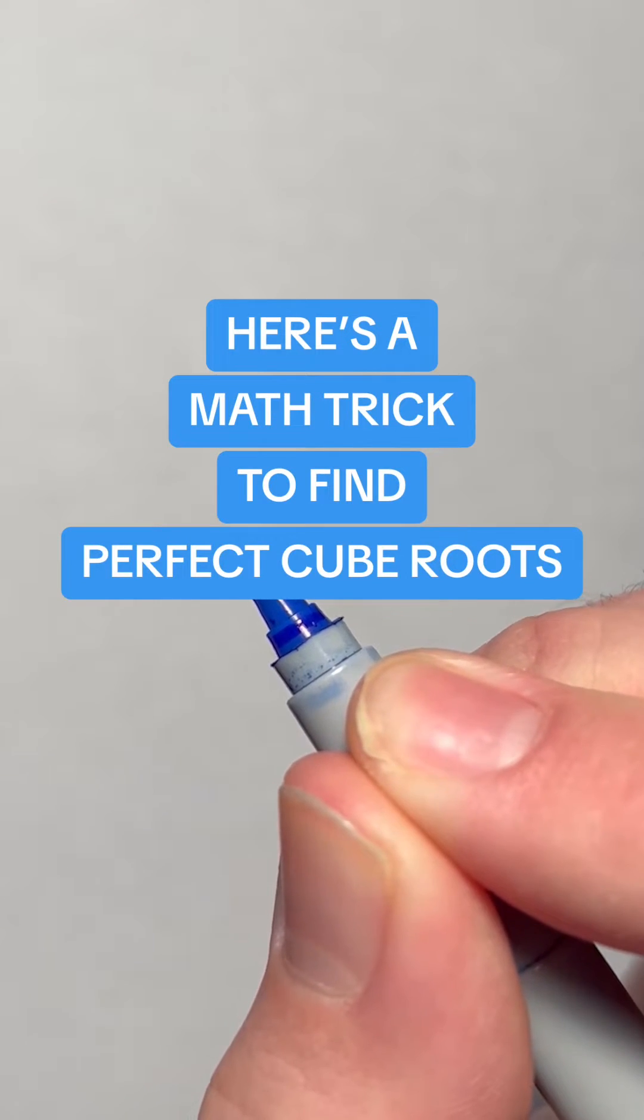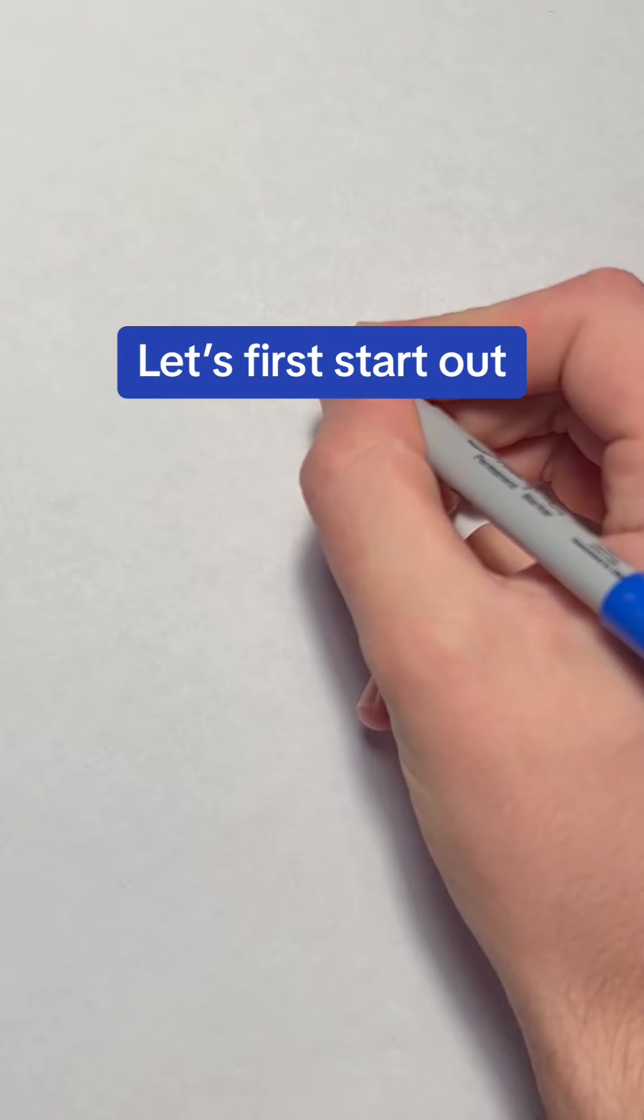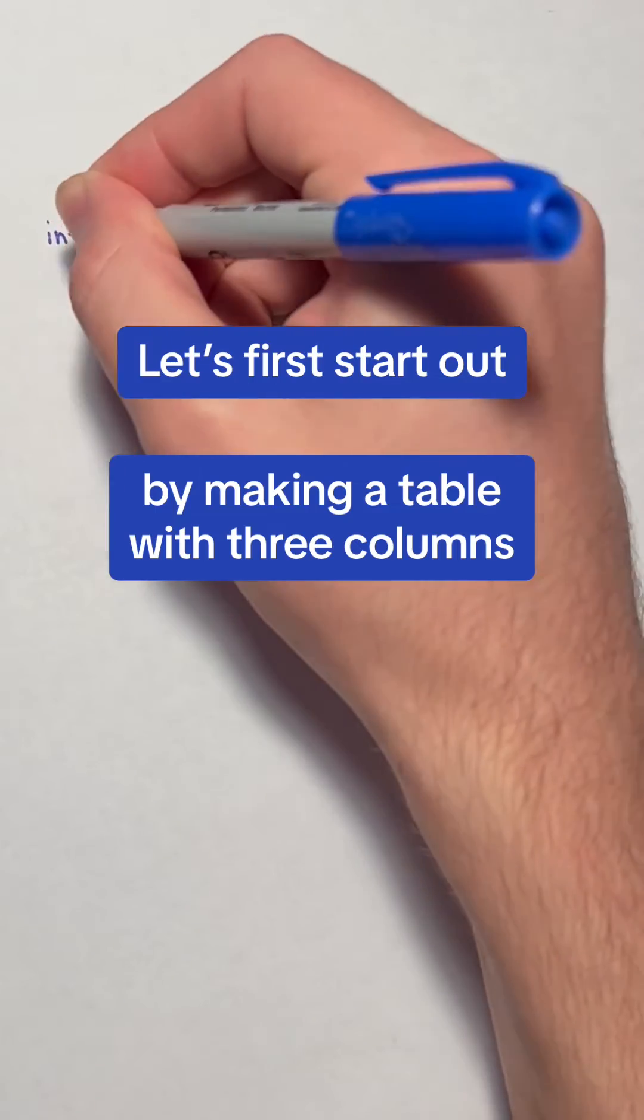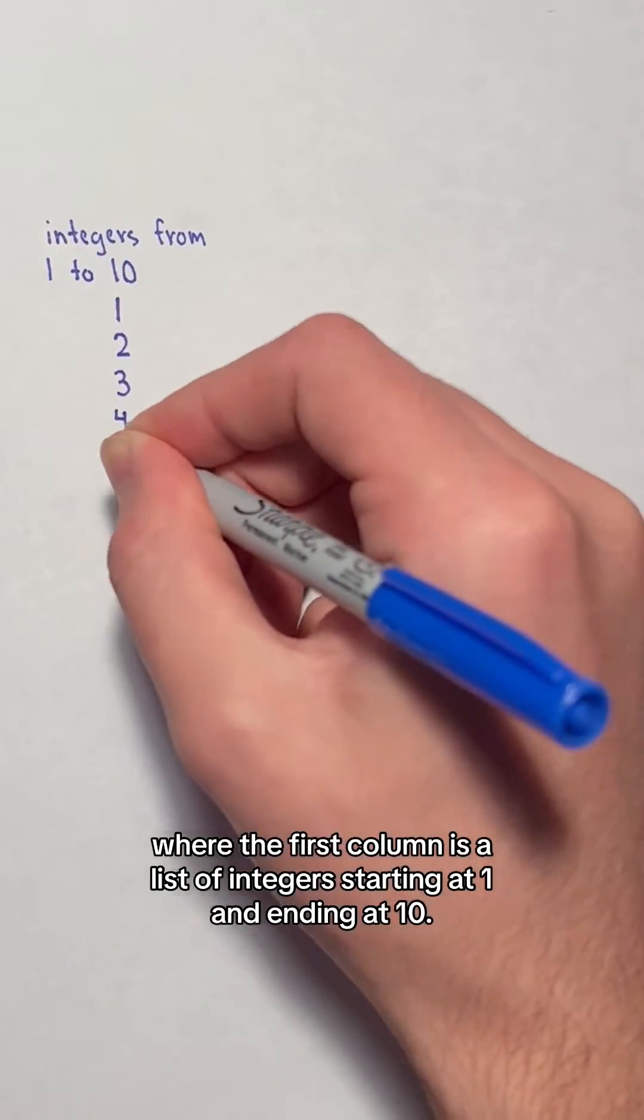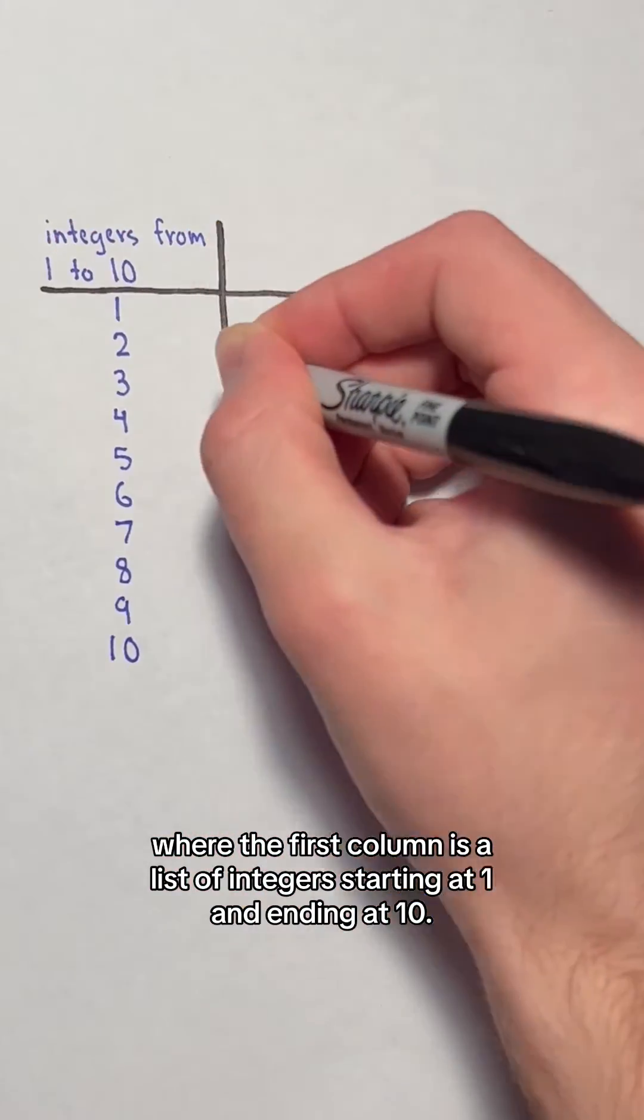Here's a math trick to find perfect cube roots in your head. Let's start by making a table with three columns, where the first column is a list of integers starting at 1 and ending at 10.